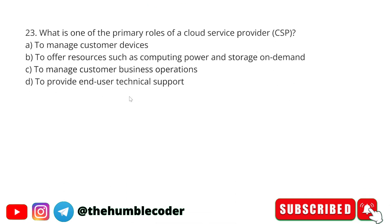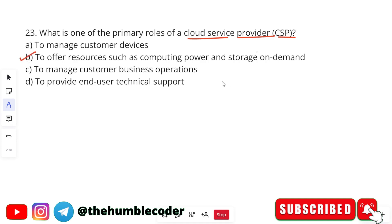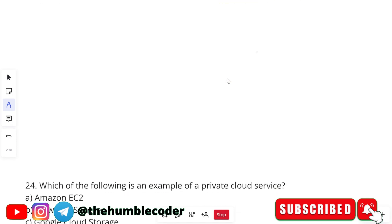What is one of the primary roles of a cloud service provider (CSP)? Options are: to manage customer devices, to offer resources such as computing power and storage on demand, to manage customer business operations, or to provide end-user technical support. The correct answer is option B — to offer resources such as computing power and storage on demand. That is the primary role of a CSP.